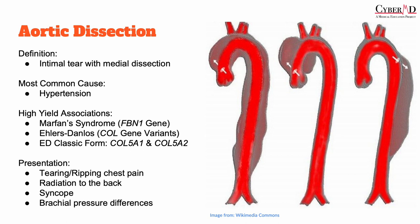The most common cause of aortic dissection is hypertension. This is a condition that typically occurs in older adults. Aortic dissection can also be associated with genetic disorders that cause defects of connective tissue, which will weaken the walls of the aorta. If you see an aortic dissection in a younger patient, it is possible that they have a weakened aortic wall due to these defects, which can cause cystic medial necrosis.